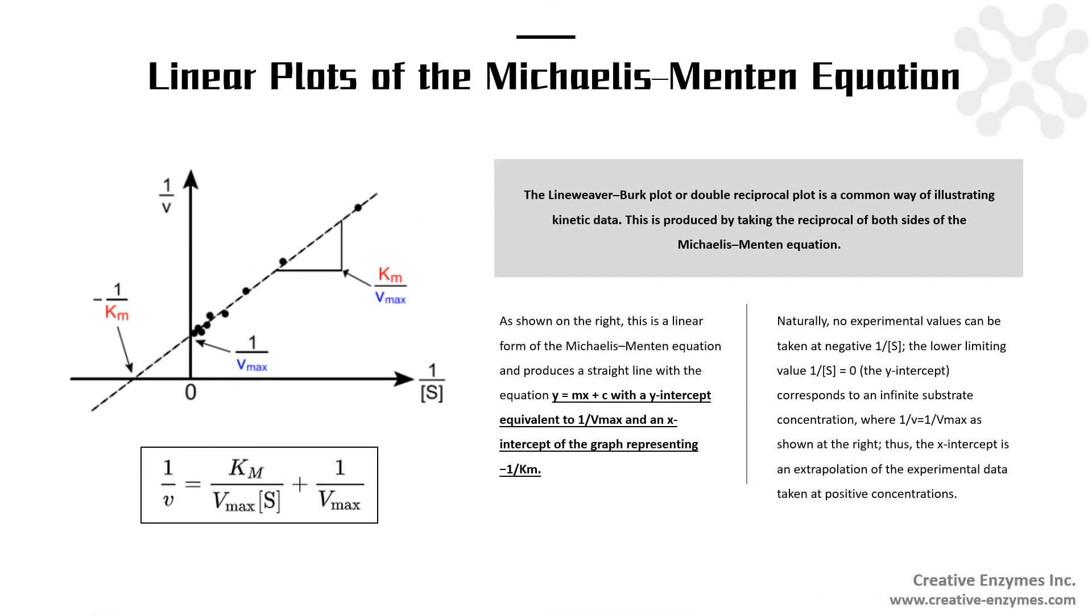The Lineweaver-Burk plot or double reciprocal plot is a common way of illustrating kinetic data. This is produced by taking the reciprocal of both sides of the Michaelis-Menten equation.